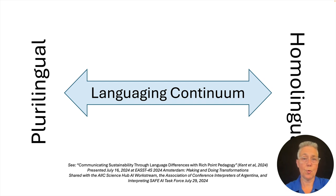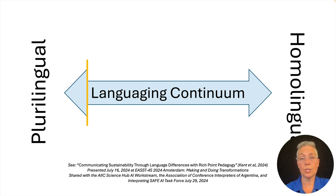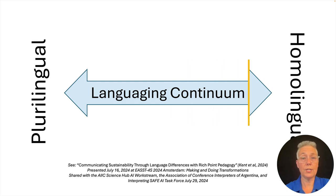When a child is born, they'll learn whatever language they are exposed to, including many languages at the same time if that's in their environment. Now there is a vertical yellow bar showing at the far left side of the continuum, at the plurilingual pole. As we develop, humans tend to consolidate or converge toward the type and kind of language used in their community. The yellow bar travels all the way to the other end of the continuum on the right, the homolingual pole.